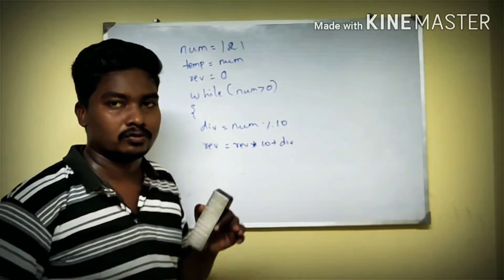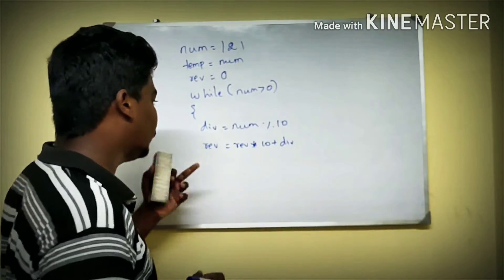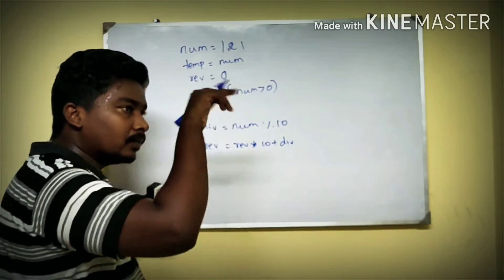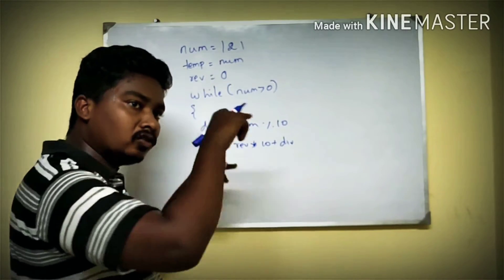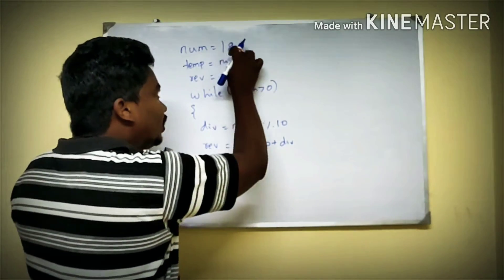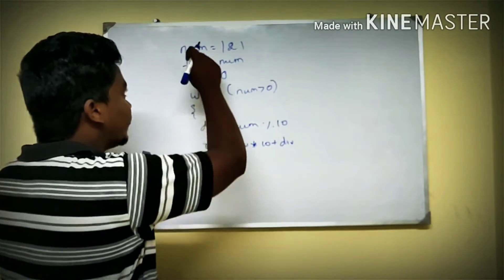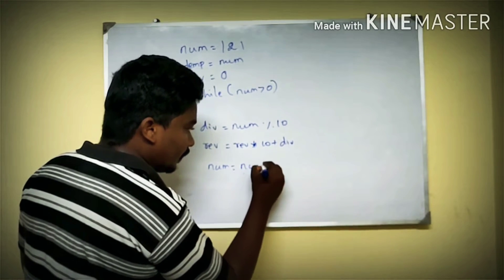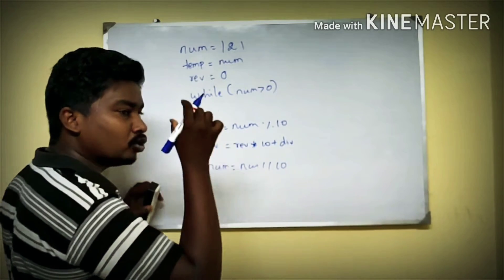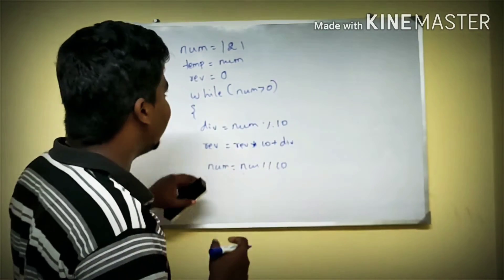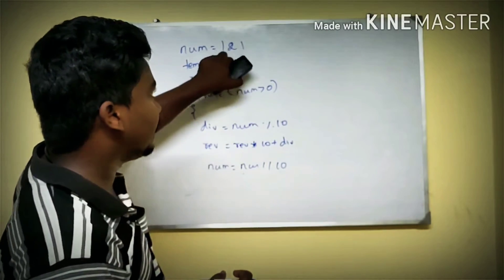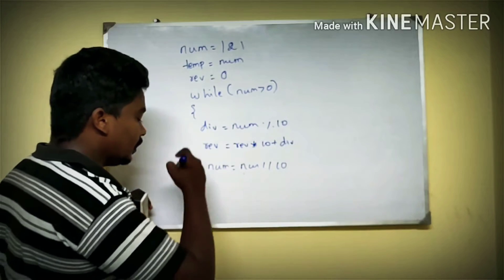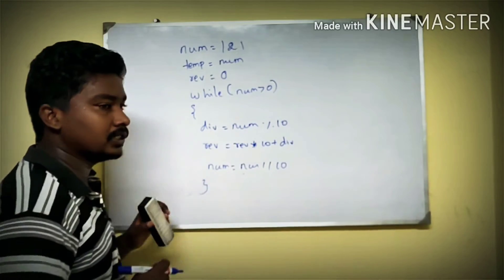So we do the explanation for the program. When we give a number, we process it using this logic. Then num1 is divided by 10 to reduce it. Now we can write the full logic.